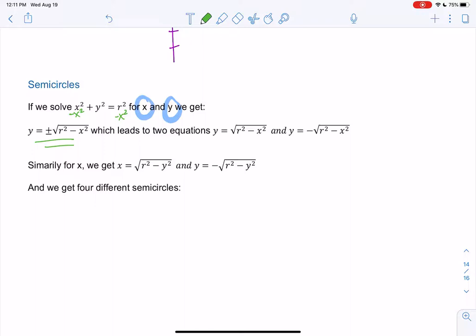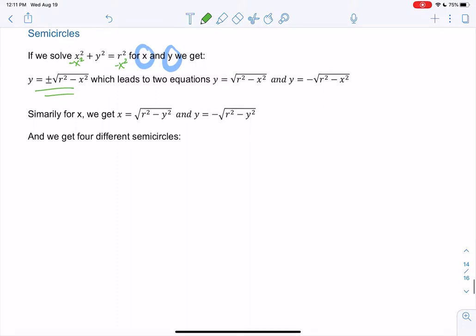You get the plus or minus. And then same idea for x, right, we'll get two different solutions. So there's really four different semicircles. So let's check them all out. I'm going to draw four different graphs just so we can keep track of them. They're all essentially the same, they're just going to be a different orientation.